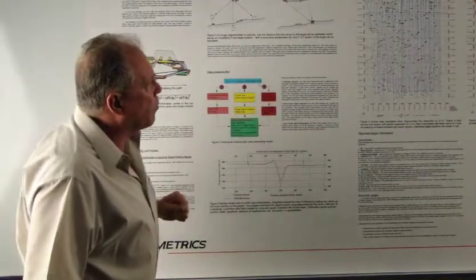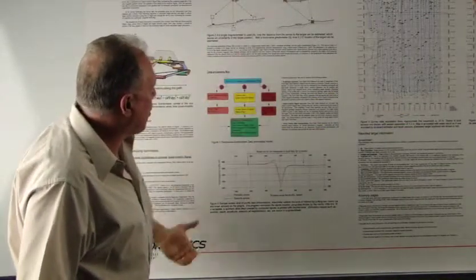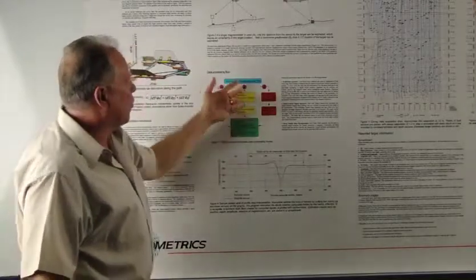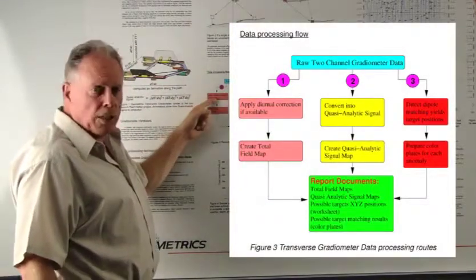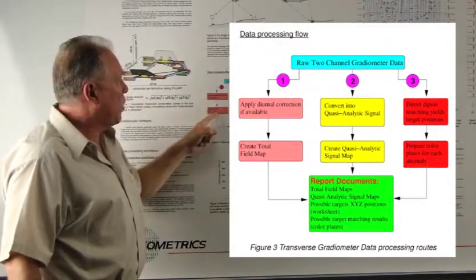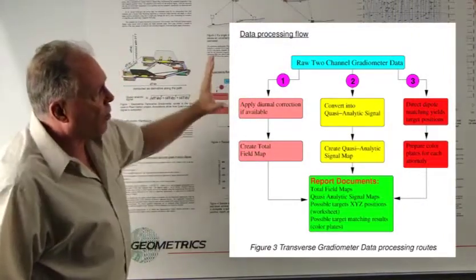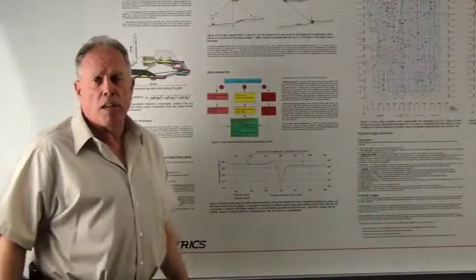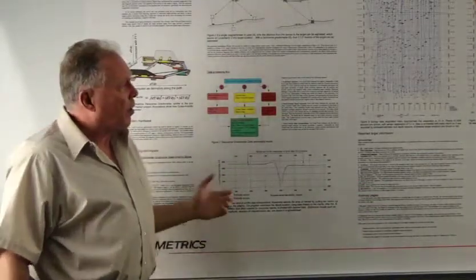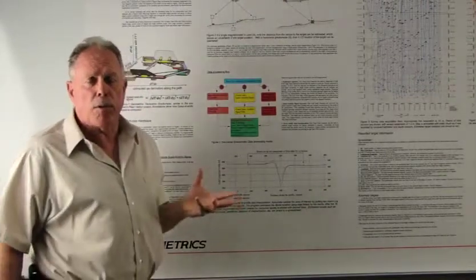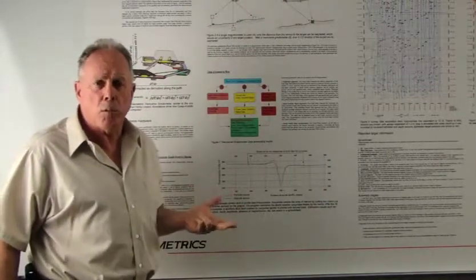To start talking about data processing, I want to discuss the first data processing path, which is to apply diurnal correction and create a total field map. We were in an area where there was a magnetic observatory, an intermagnet observatory that records the Earth's magnetic field on a continual basis.